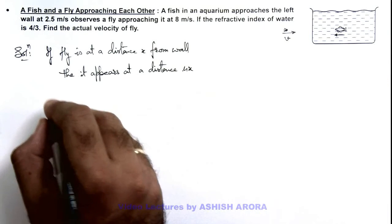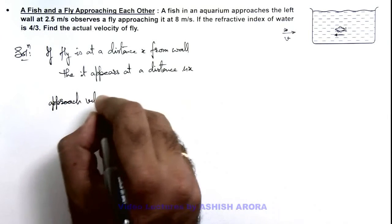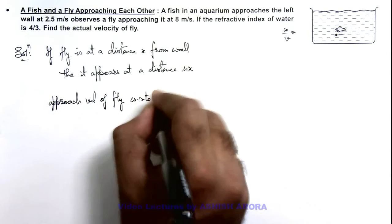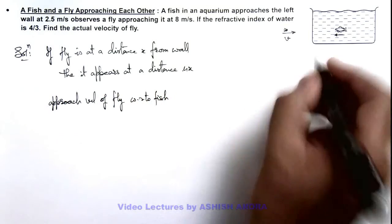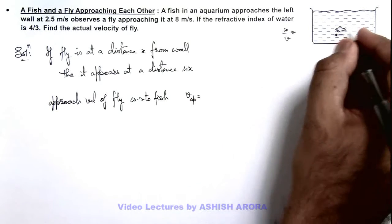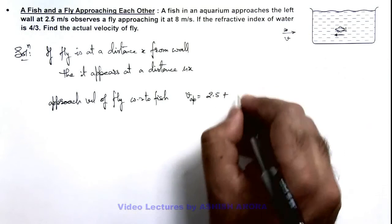So we can write the approach velocity of fly with respect to fish that is seen by fish. We can write v approach is equal to fish velocity is 2.5 meters per second plus it will be mu v.